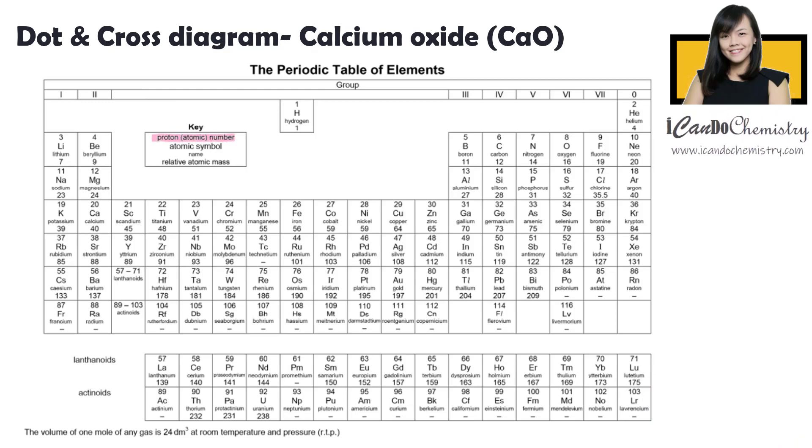In this periodic table, the number at the top tells us the number of protons an atom has. Since the number of protons and electrons are the same in an atom, this number also tells us how many electrons each atom has. The number at the bottom tells us the number of protons and neutrons each atom has.